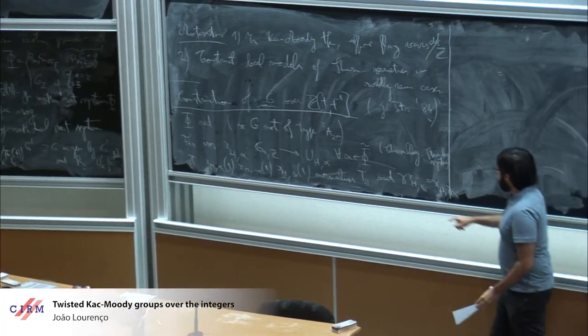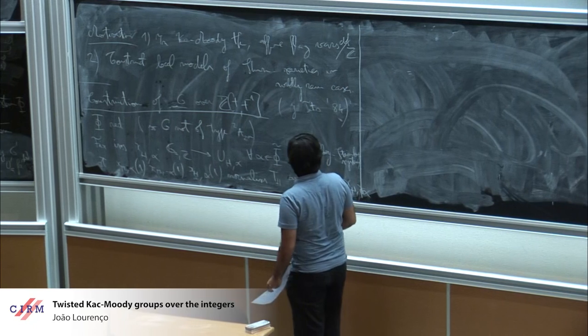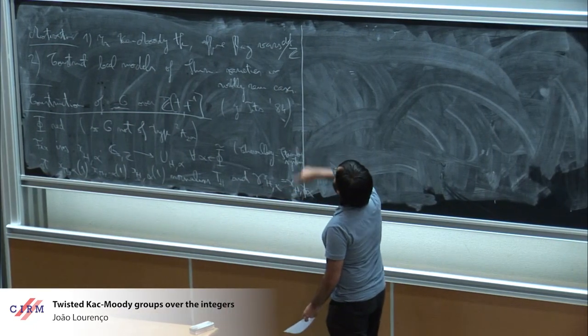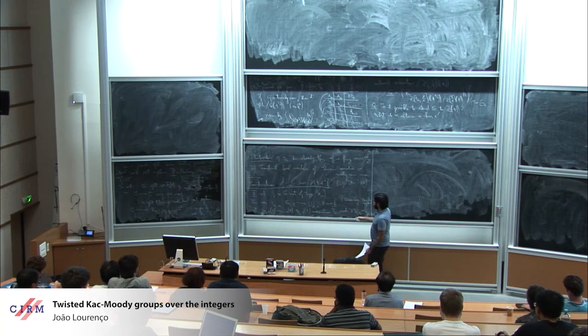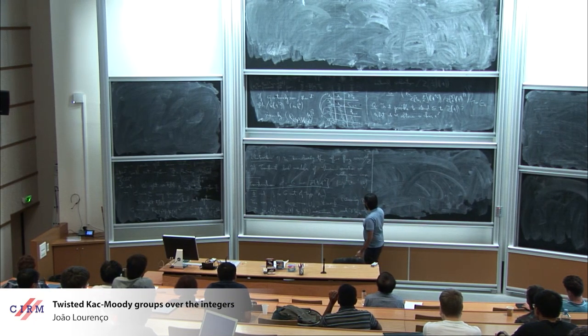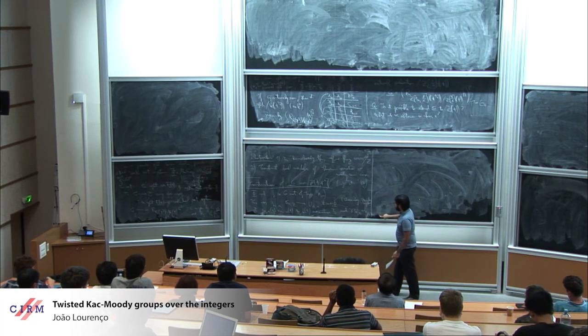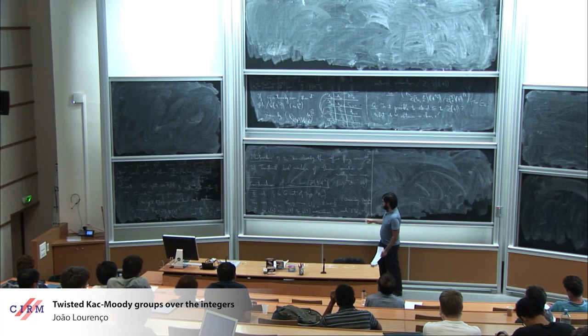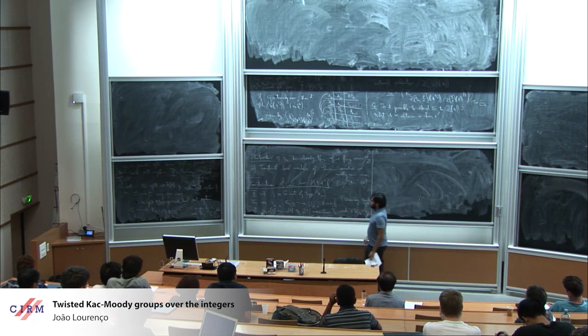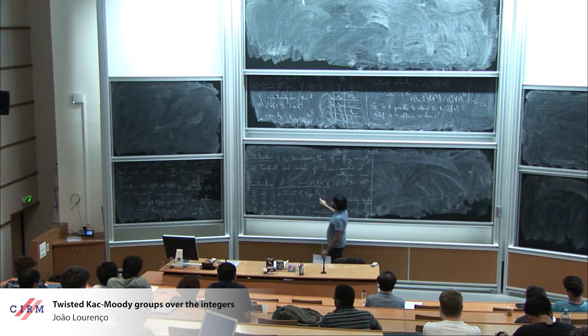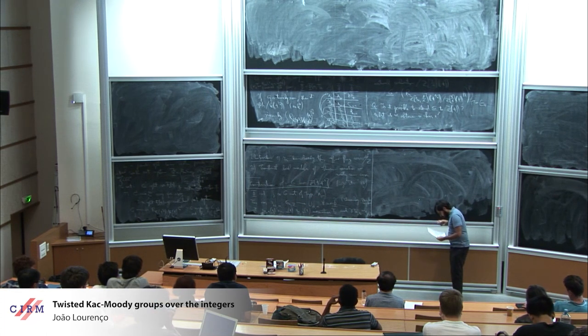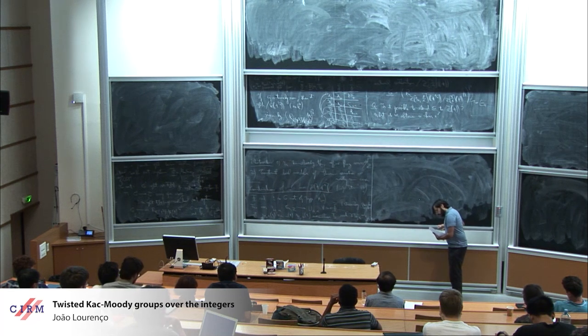You want every element γ of that big Γ over there, which is also isomorphic to the automorphism group of the pinning of H, to satisfy this property. You can always do this if you drop this case. If you add that case, you have some signs which you can't get rid of.